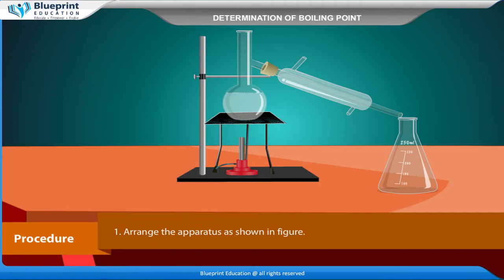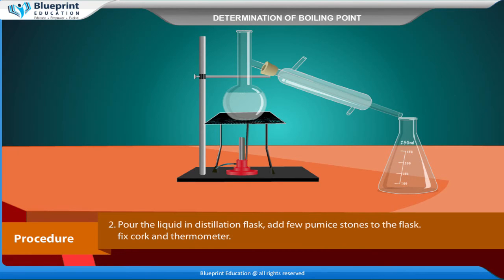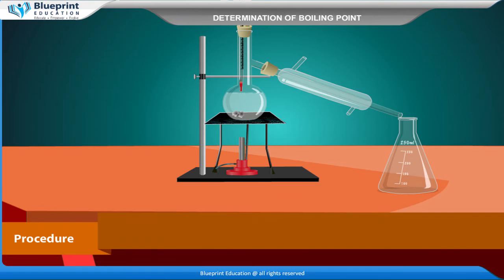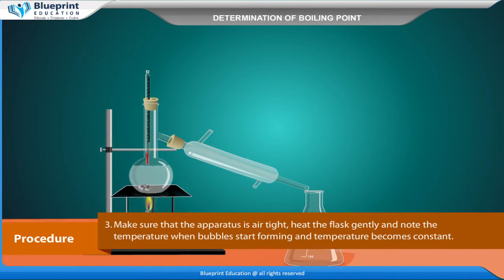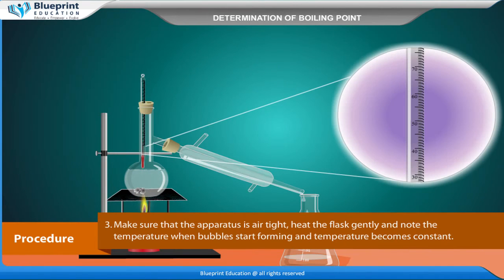Procedure. Arrange the apparatus as shown in figure. Pour the liquid into the distillation flask, add few pumice stones to the flask, fix cork and thermometer. Make sure that the apparatus is airtight. Heat the flask gently and note the temperature when bubbles start forming and temperature becomes constant.